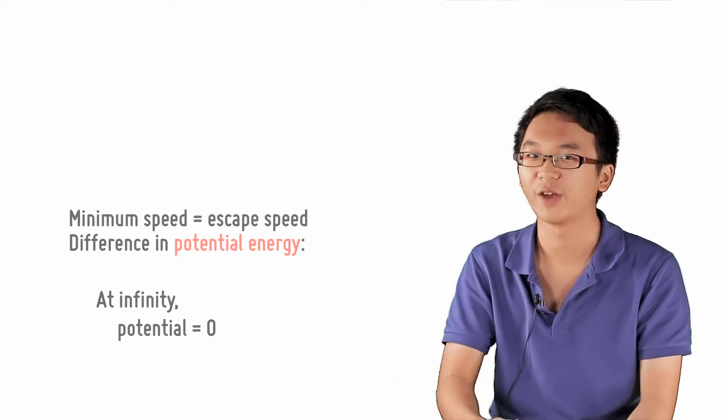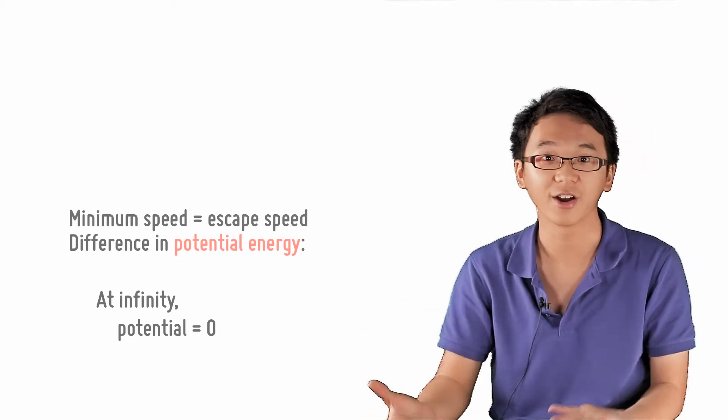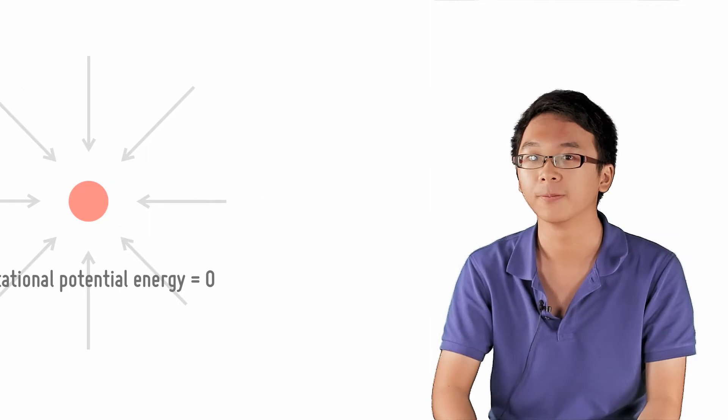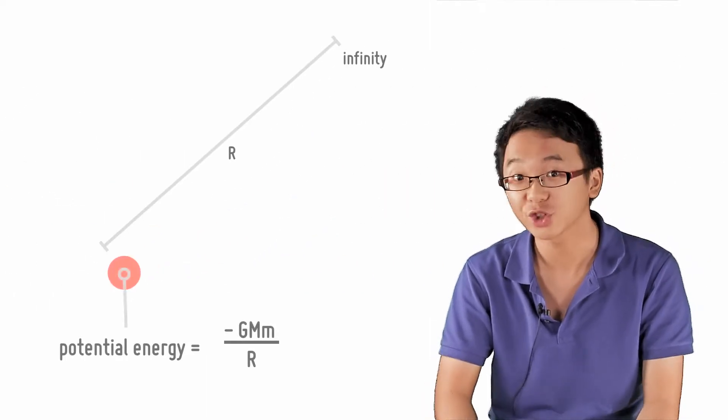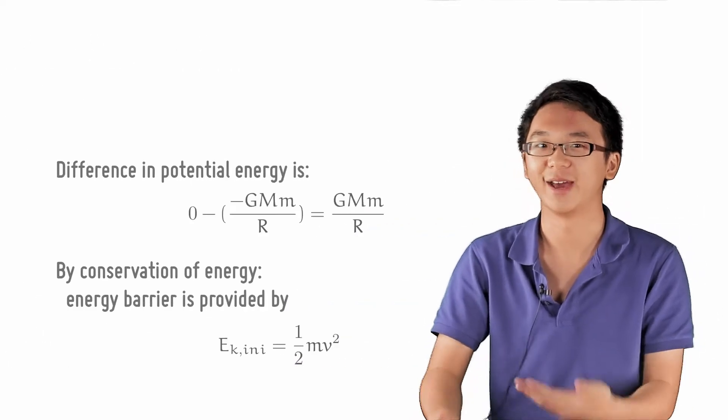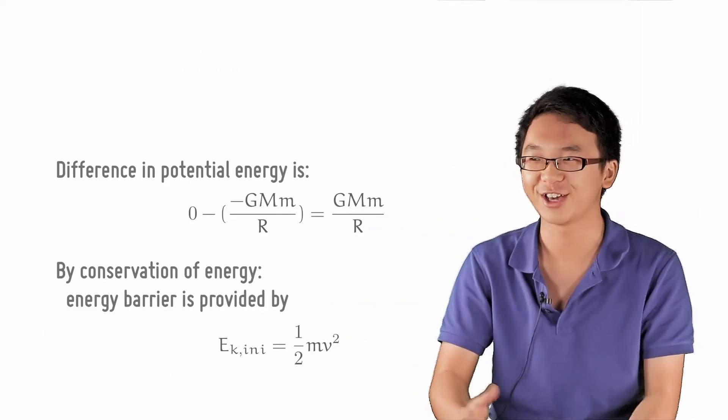A distance away from infinity, let's call it r, the potential energy here is negative GMm over r. The difference in potential energy is thus zero minus negative GMm over r equals GMm over r.